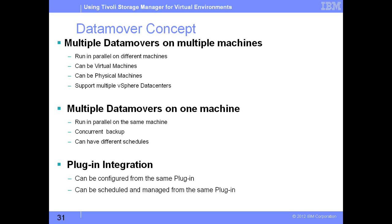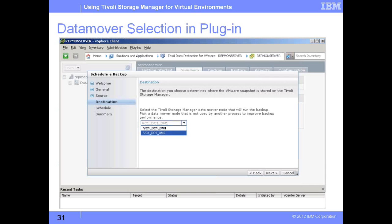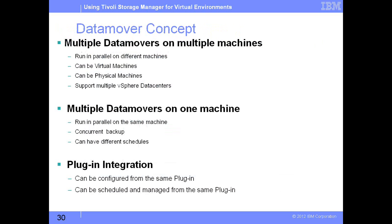Each data mover owns the backup for the particular VMs assigned to it and performs backups accordingly. By using multiple data movers, you can have multiple VMs backed up in parallel. Data movers can also support multiple vSphere data centers, with each data mover pointing to a different data center. Coming back to slide number 30, you can see all configured data movers listed individually in the plugin. The more data movers you create and point to a common data center in the TSM configuration, the more you can see listed here.